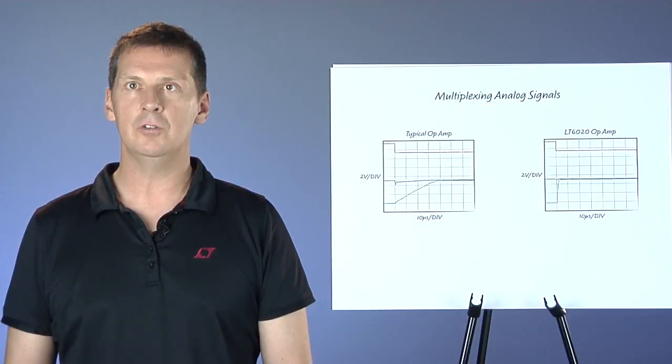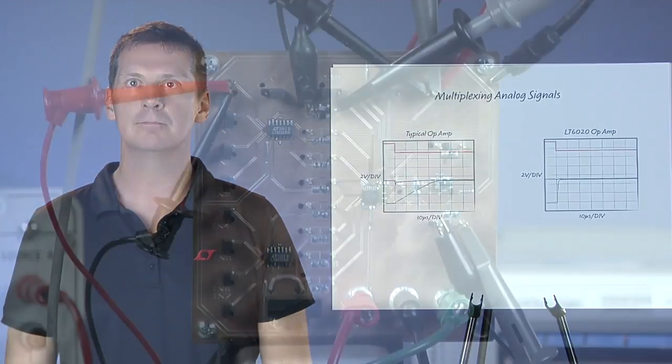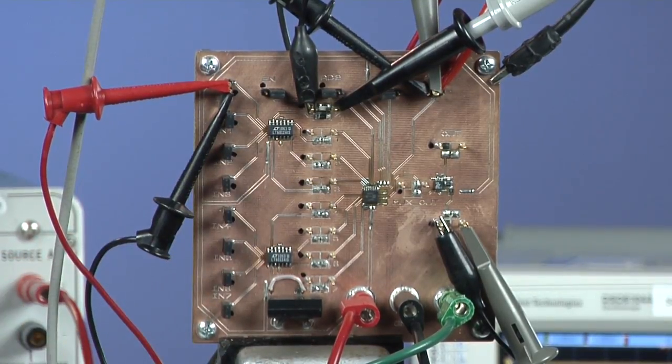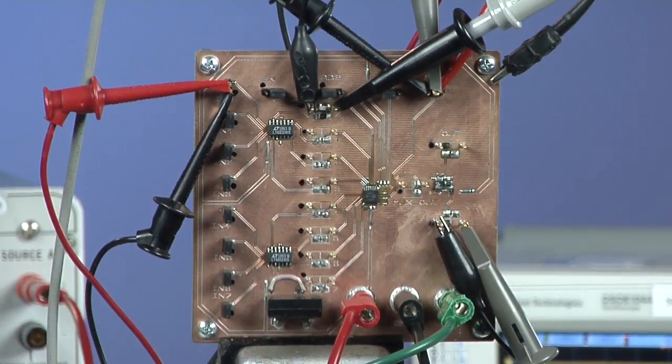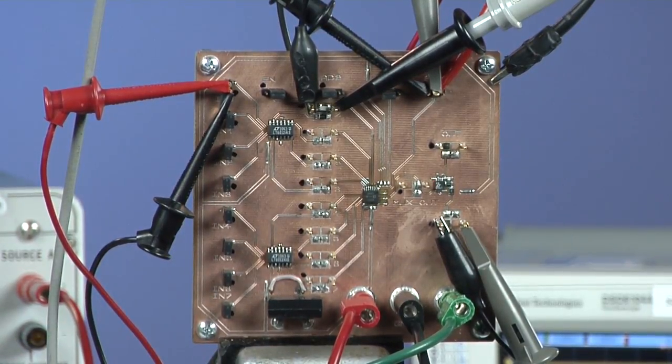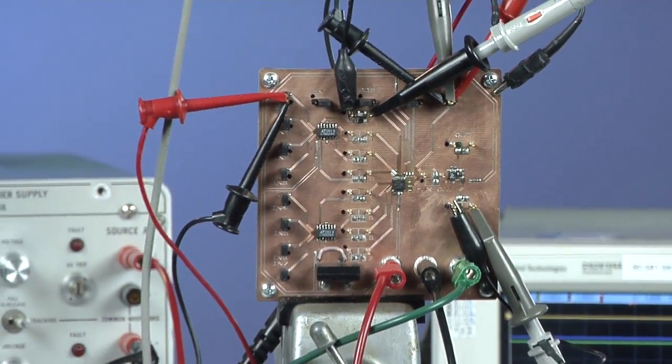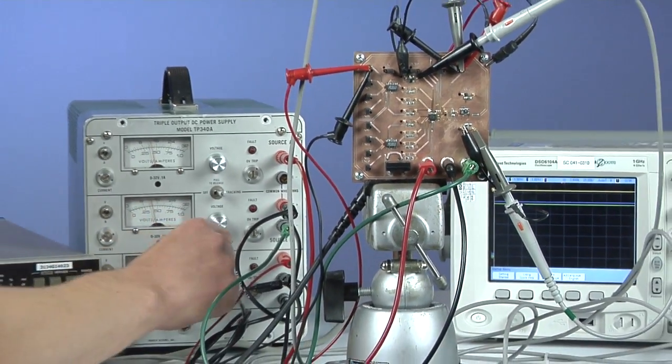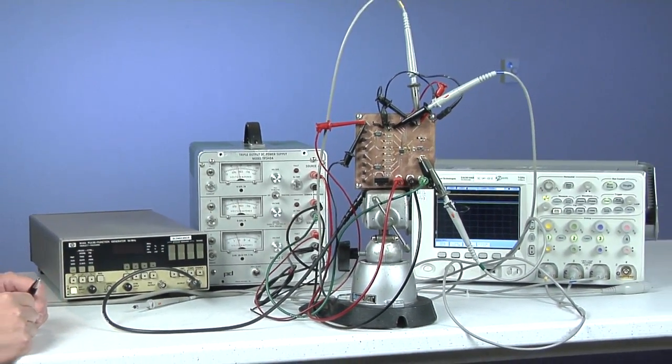Let's see how the LT6020 op-amp performs in the multiplexer application in the lab. I have a board with eight analog input channels, each buffered by a slow precision op-amp. These signals are combined in an analog MUX, controlled by three logic signals. The MUX output connects to the LT6020 op-amp buffer. To look at the behavior when the MUX switches between two channels, I connect ground to analog input 1, and I connect a DC voltage source, for example 5V, to analog input 2.